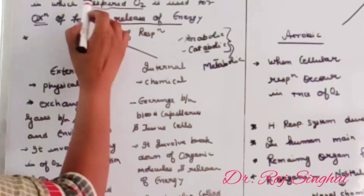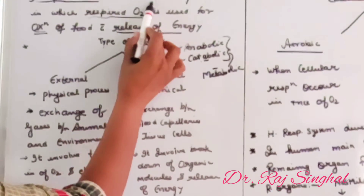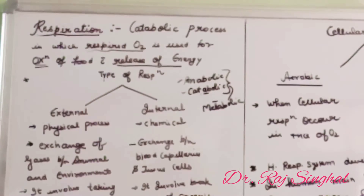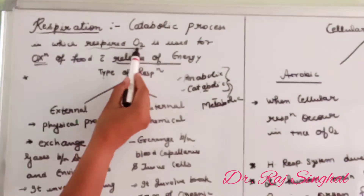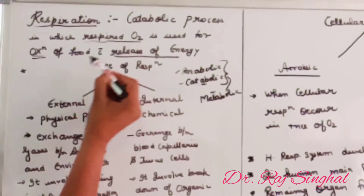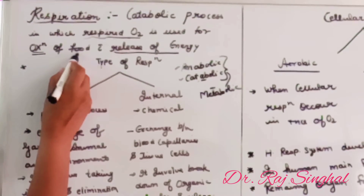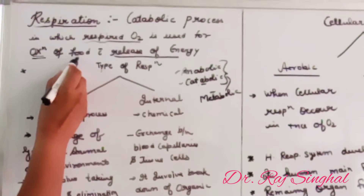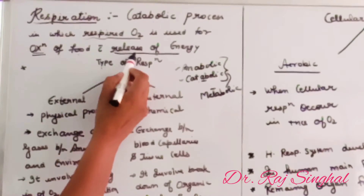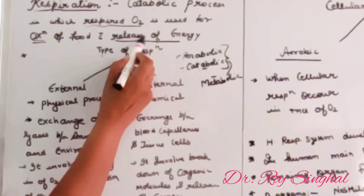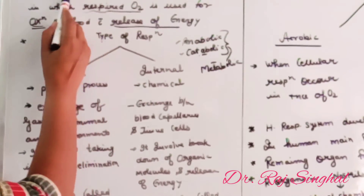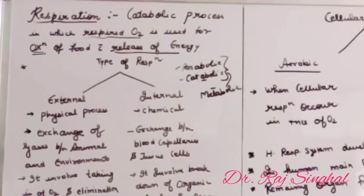In the case of respiration, breaking down — that is, the catabolic process — occurs with the help of oxygen which we intake. This oxygen is used for the oxidation of food material obtained from the digestive system, and this results in the formation of energy. This complete process occurs in respiration.